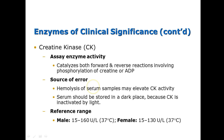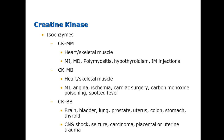For CK, hemolysis will really interfere with this test, so make sure you avoid hemolysis. The reference range is 15 to 160 units per liter for males and a little bit lower for females, since CK is found in muscle tissue and females have slightly less muscle. Creatine kinase has isoenzymes, so total CK equals CKMM plus CKMB plus CKBB added together. If CKMM is increased, it could indicate myocardial infarction, muscular dystrophy, polymyositis, hypothyroidism, or intramuscular injections.